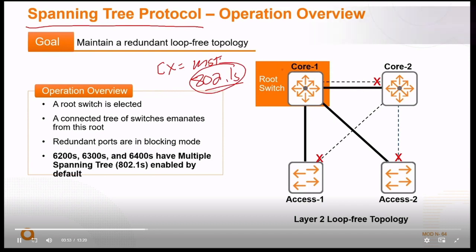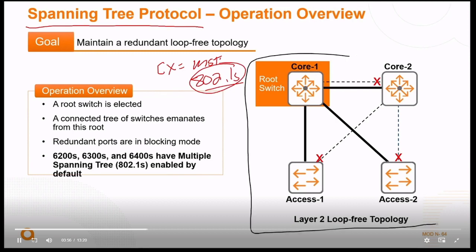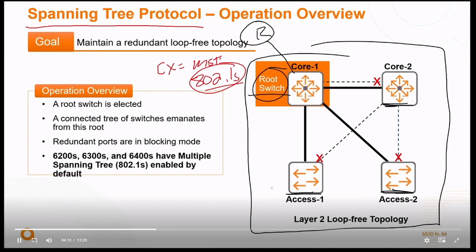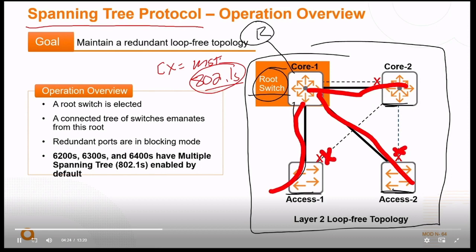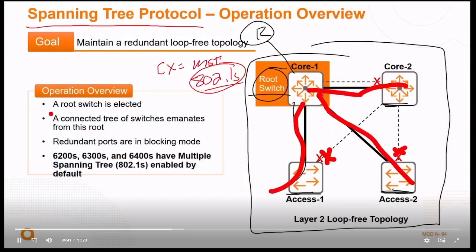Essentially what spanning tree does is it takes your switches that are all within the same broadcast domain — all in the same region. One of them is automatically elected as the root switch, or you can designate a root switch. All the rest of your switches will figure out the best path to send their traffic through the root. The root effectively becomes the hub of your network, and any redundant links that are running will have their user traffic disabled. Management frames — like Link Layer Discovery Protocol, Cisco Discovery Protocol, and 802.3 BPDUs — still run in the background.